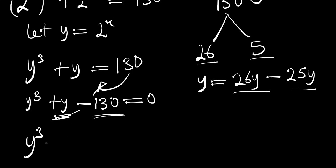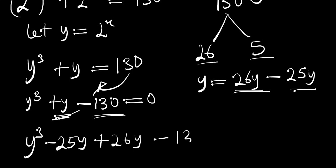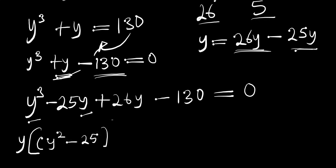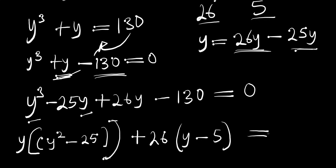So that means we have y cubed, and instead of y we have 26y minus 25y. That gives us y^3 - 25y + 26y - 130 = 0. Now we have y here and y here, so we can factor: y(y² - 25), then factor out 26 to get plus 26(y - 5) = 0.